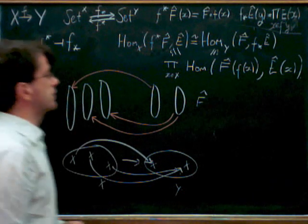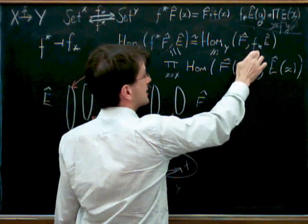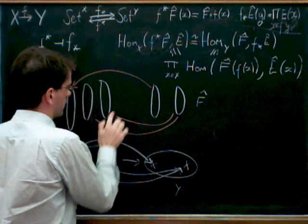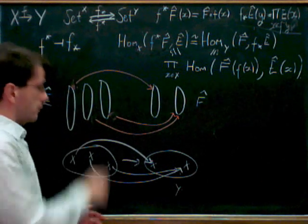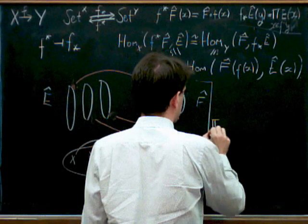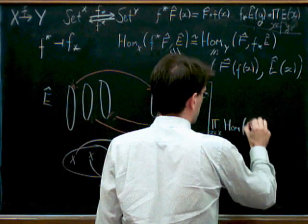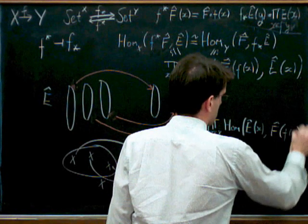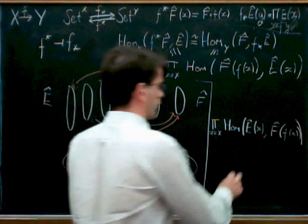But this can lead us to see what the other adjunction is. So here we have that pullback F upper star has this right adjoint F lower star, but we can actually figure out the other way around. We can equally well switch this around. So we can look at the set of maps going the other way. So if we look at the product over X in X from the Homs, so this is going from E hat of X into F hat of the image of X.